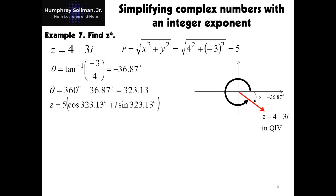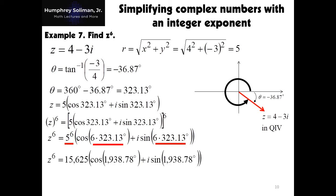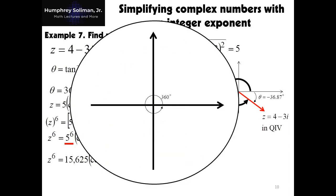Therefore, our complex number z in polar form is 5 times the quantity cosine 323.13 degrees plus i sine 323.13 degrees. Now we can evaluate z raised to 6. The modulus will be raised to 6, and our argument will be multiplied by 6. So z raised to 6 equals 15,625 times the quantity cosine 1938.78 degrees plus i sine 1938.78 degrees.